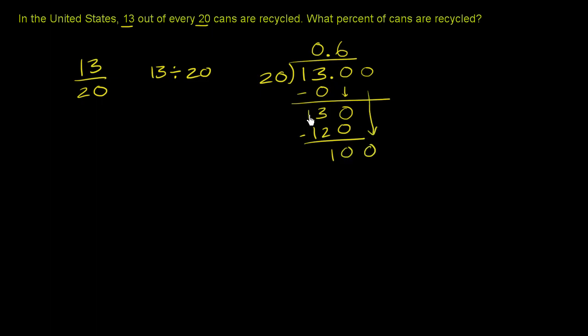Let's bring down another 0. 20 goes into 100 five times. 5 times 20 is 100. And we are done. So this written as a decimal is 0.65.